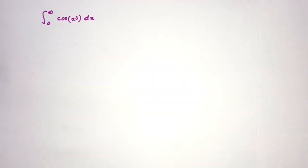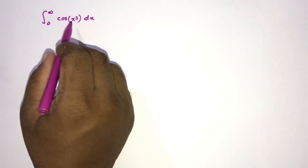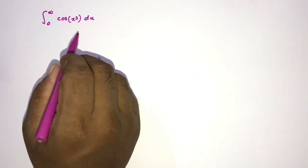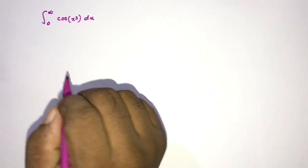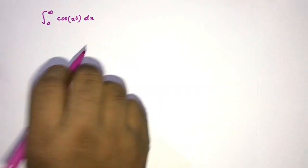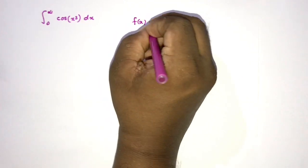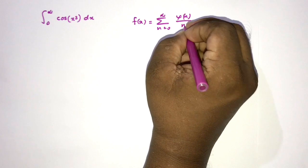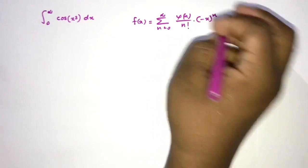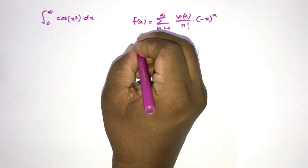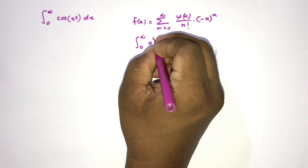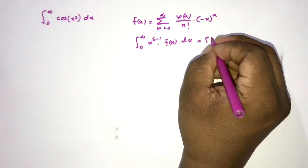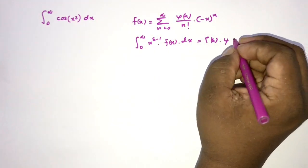Welcome to the Mathematics and My channel. In this video we are going to solve the integral from zero to infinity of cosine of x cubed dx, using Ramanujan's Master Theorem. In a previous video I solved this integral in under one minute — I'll leave the link in the description. Ramanujan's Master Theorem states: if f(x) equals the sum from n=0 to infinity of φ(n)/n! times (−x)^n, then the Mellin transform of f(x) — the integral from zero to infinity of x^(s−1) f(x) dx — equals γ(s) times φ(−s).